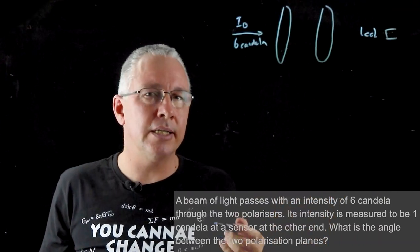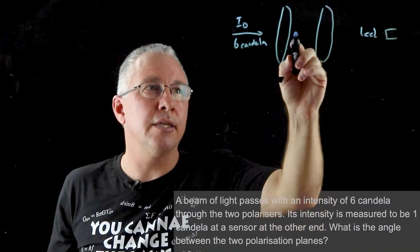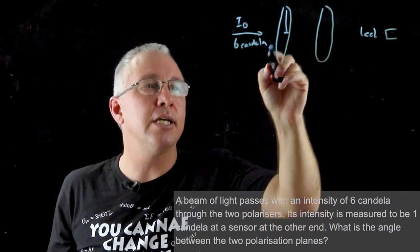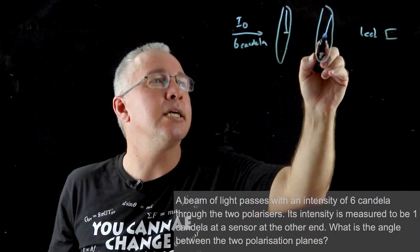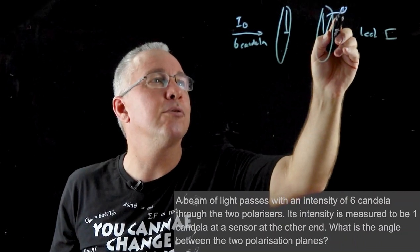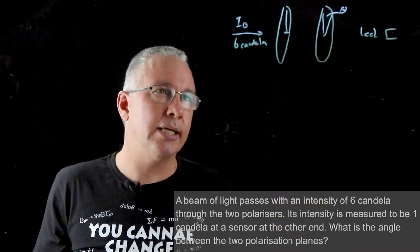So what I now need to do is what is happening from here to here, and therefore if this is arranged in the vertical, what is the angle here that we're looking for to work out why we have one candela.